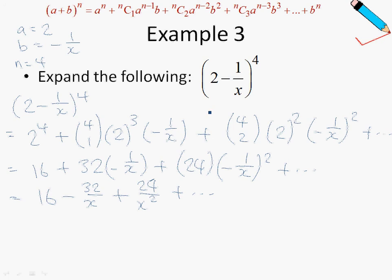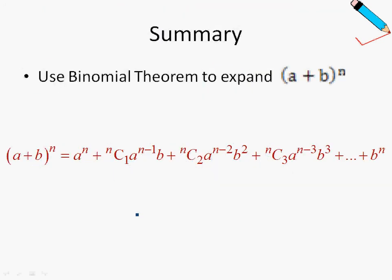Before I end off, just take note that the number of terms to show will depend on the question. If the question says show the first three terms, then just do what I did here. If it says show the first five terms, then you show five terms. To wrap up, this is how we use the binomial theorem to expand. All you need to do is first identify your a, your b, and your n, then do the appropriate substitution into the formula, and you're more or less done. See you in the next video.